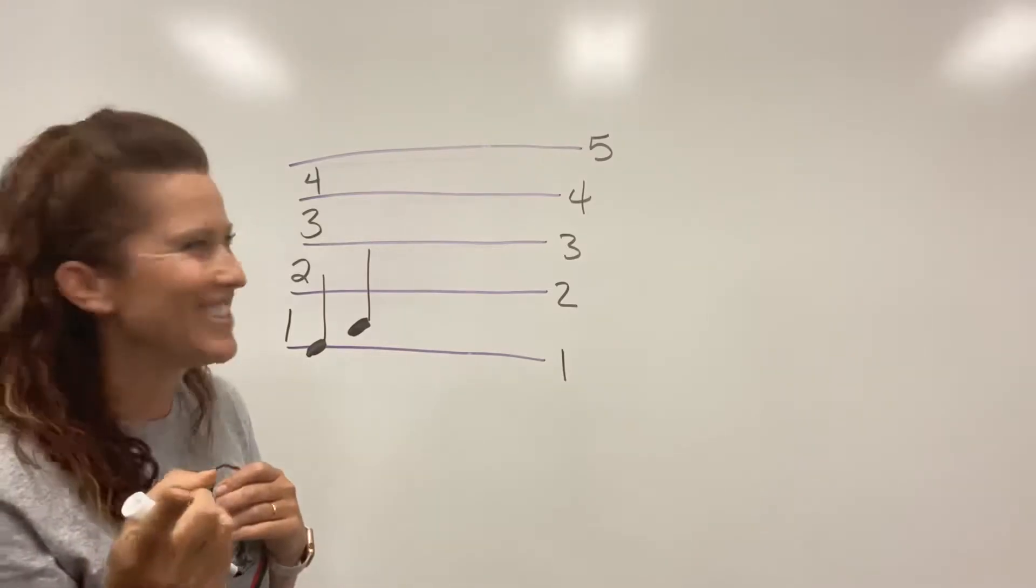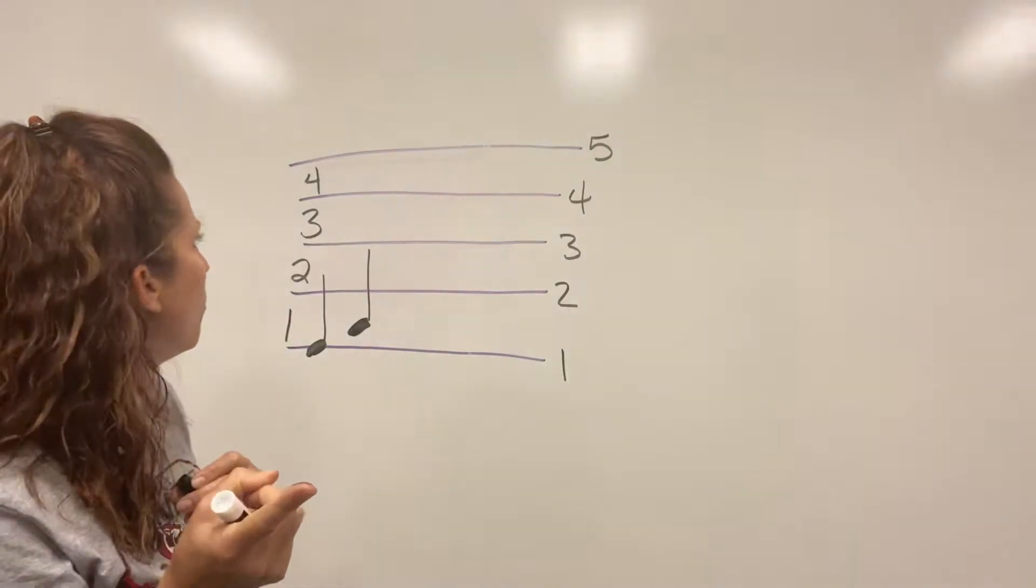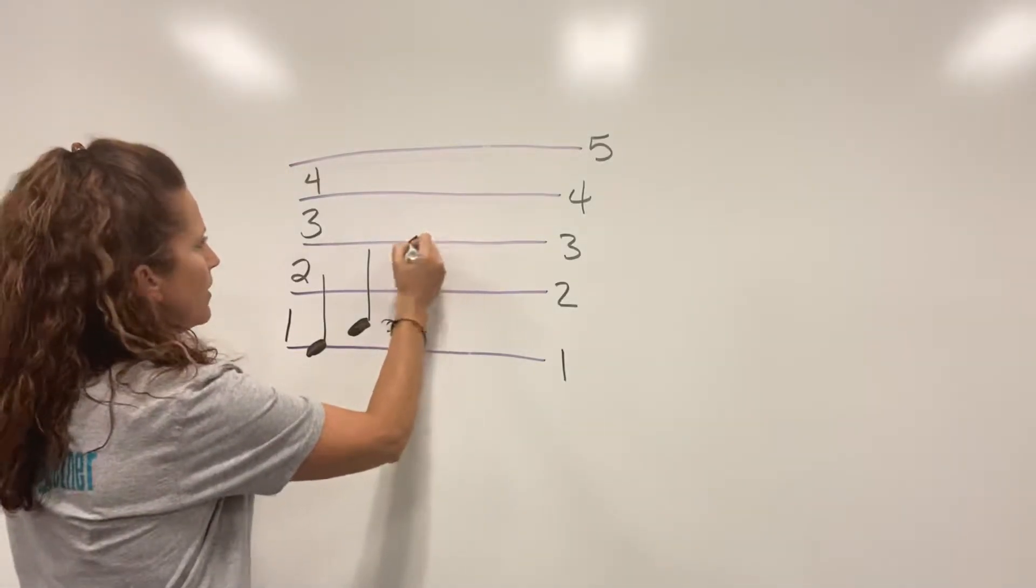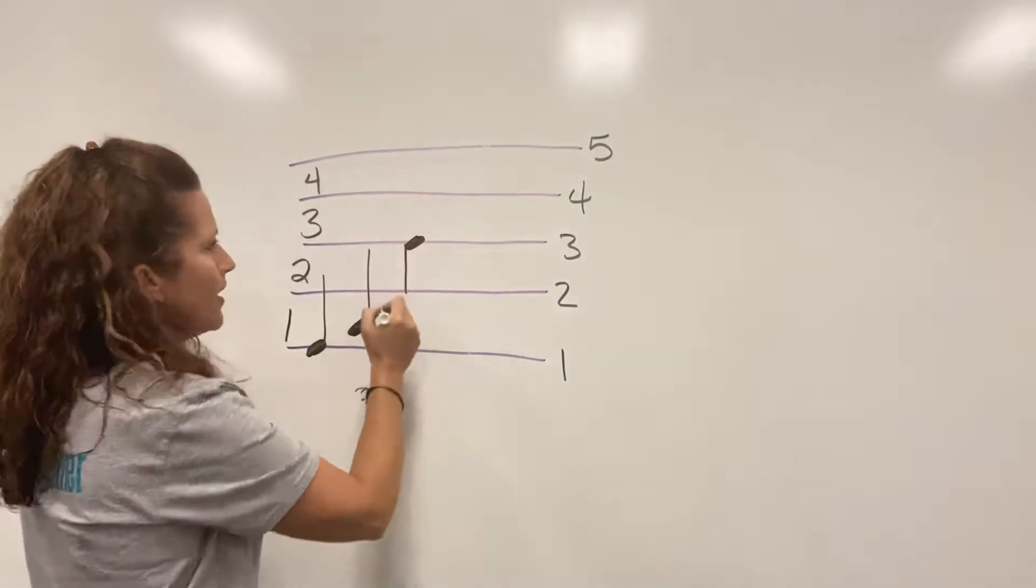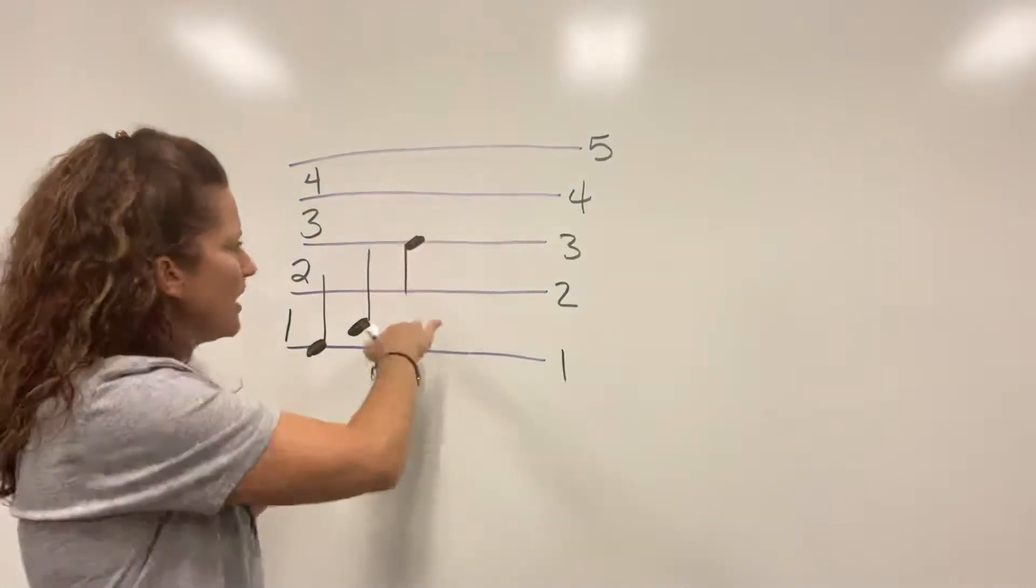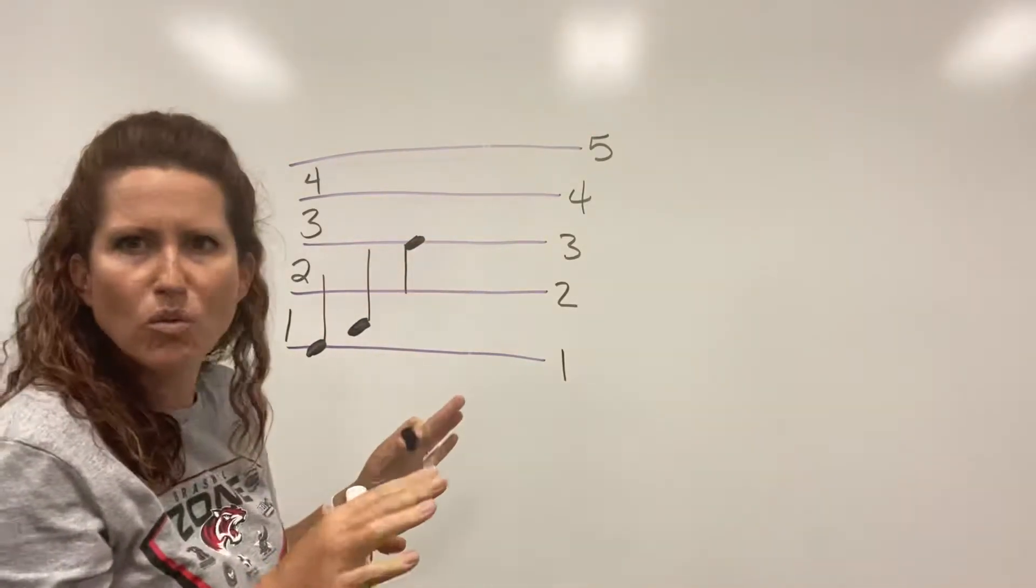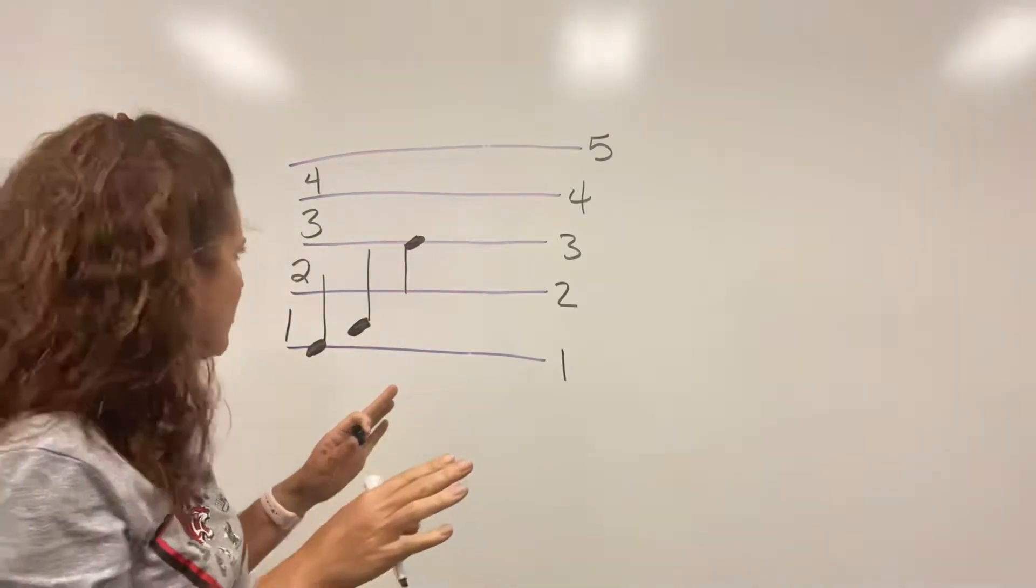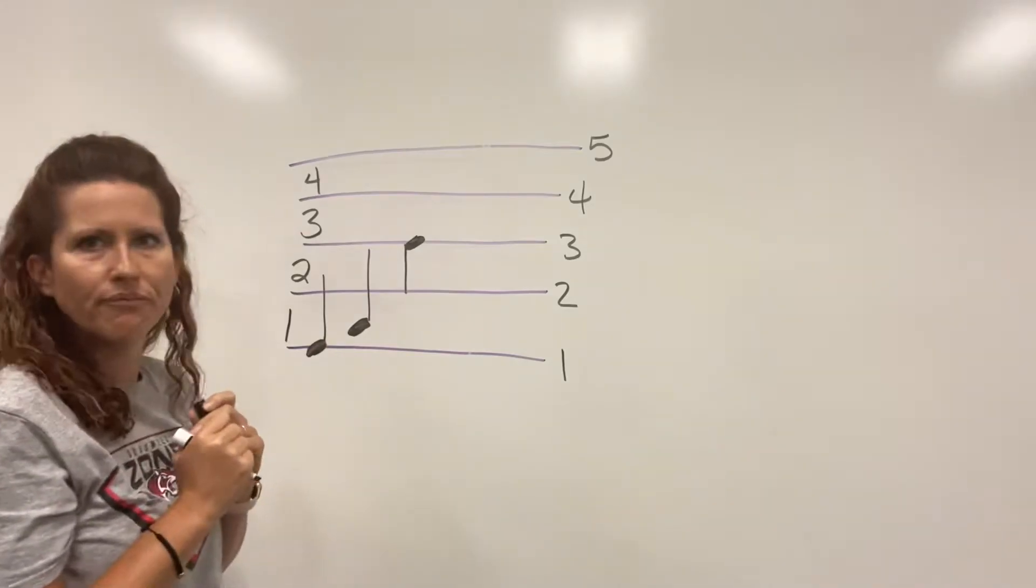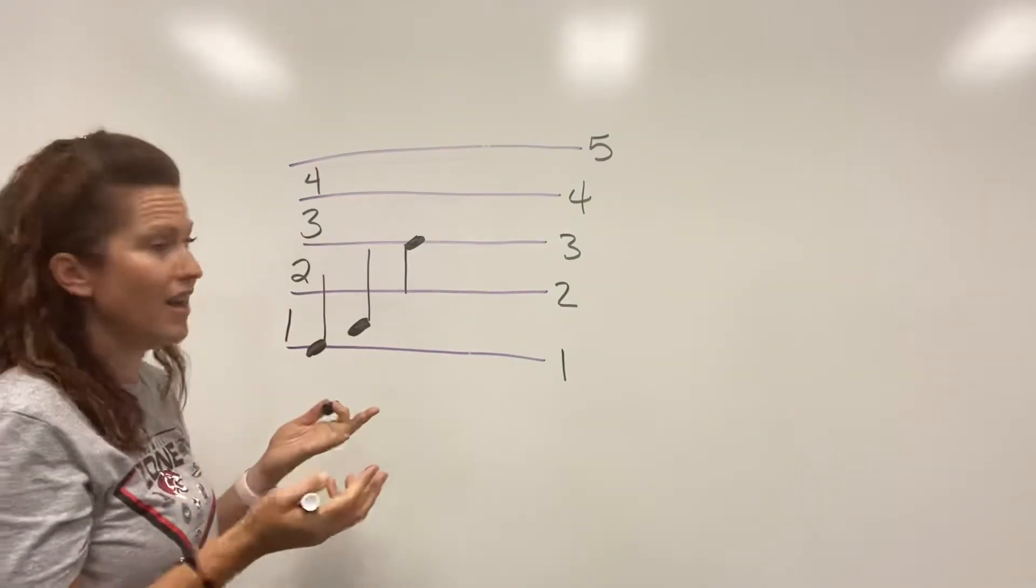So now I'm gonna have you try. So here I'm gonna draw one here. Now I put my stem going down because when we get to the middle line it just changes direction. So that's normal, not a big deal. That's a normal thing. So this is on the what? The third line.